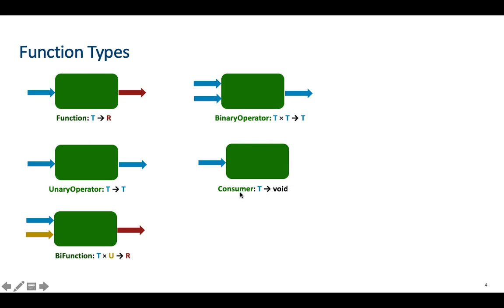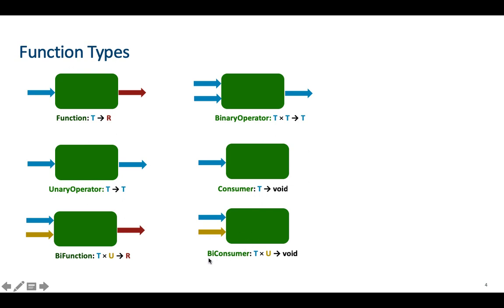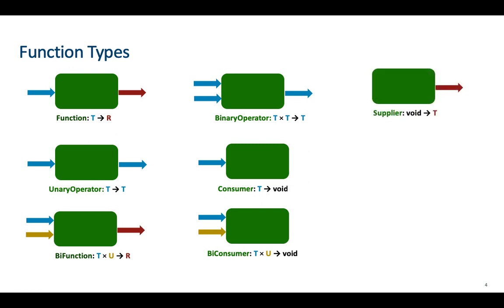When we have two inputs for a function it is called BiConsumer or Binary Consumer. When the function has one output and it doesn't have any inputs it is called Supplier in Java.